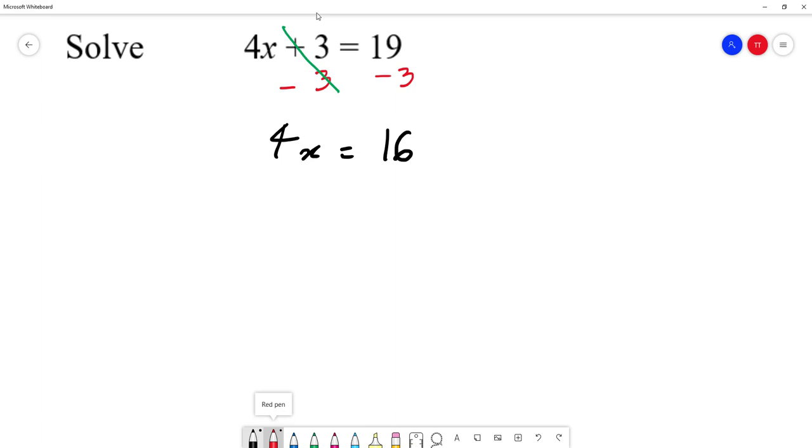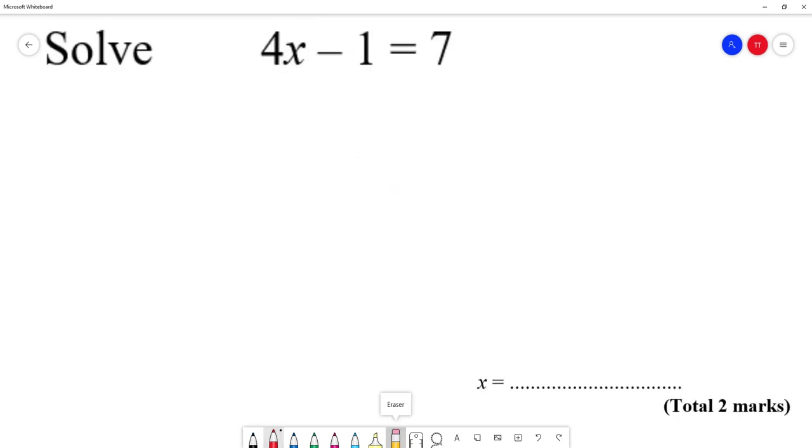Now 4x means 4 times x, so the opposite of times is divide. So we divide by 4 on the left hand side, divide by 4 on the right hand side. So we end up with 4x divided by 4 gives me x, and 16 divided by 4 gives me 4. So the answer is 4.